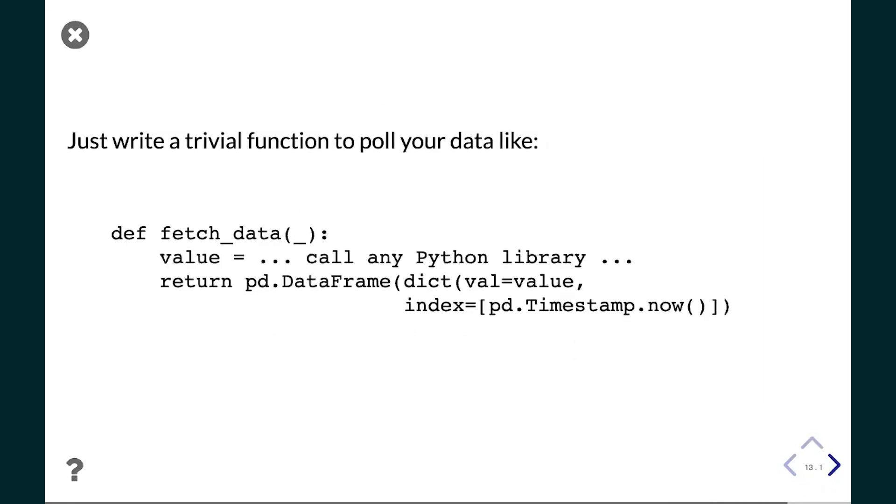So Streamz is not limited to Tornado. The stuff that I'm showing is specific to Tornado, but Tornado is very widely available. It's available as part of Jupyter, it's also available as part of Bokeh and Panel. So that's the specific use case I'm focusing on. So if you are using Tornado, you can use a little helper function that I'll show you in a second. But all you need to do is write a little function like this, fetch_data, and it returns a Pandas dataframe of any length.